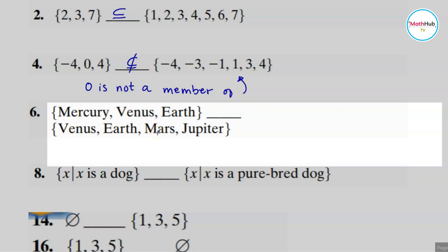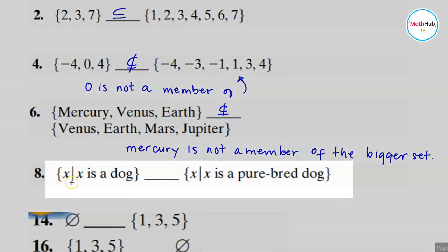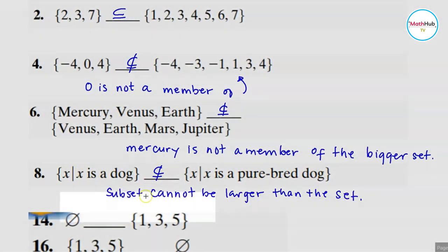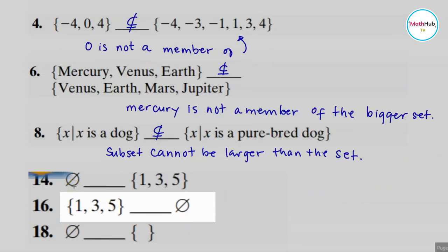No, because Mercury cannot be found in that set, so this is not a subset. Now this example here: {x | x is a dog} compared to {x | x is a purebred dog}. Is this set a subset of that set? It is not a subset because a subset cannot be larger than the set — and clearly this set is larger than that one.